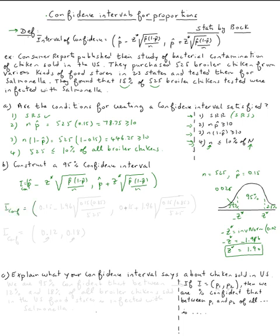Interval of confidence equals p hat, zero point fifteen, minus z star is one point nine six, p hat zero point fifteen, one minus p hat is zero point eighty-five, divide by n, five twenty-five. Same thing here, zero point fifteen plus one point nine six, zero point fifteen, zero point eighty-five over five twenty-five.